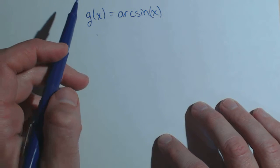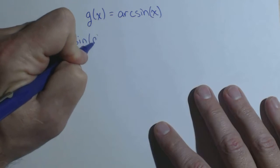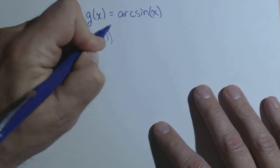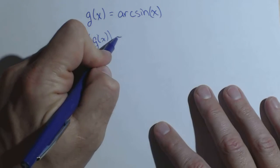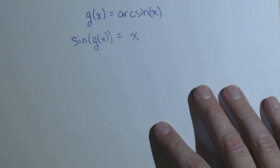So what I'm going to do is take the sine of both sides. Over here I get sine of g of x, and when I take the sine of the arc sine of x, because they're inverses, I get x.